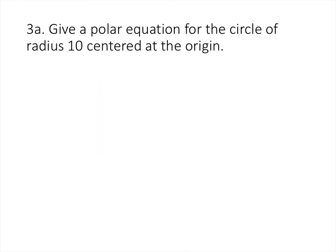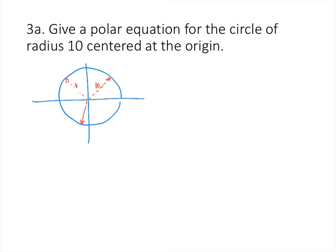Now we look at polar equations for certain types of curves. A circle centered at the origin is one of the easiest to describe. If the radius is 10, the distance from the origin to every point on the circle is always 10, so the polar equation is simply r = 10.